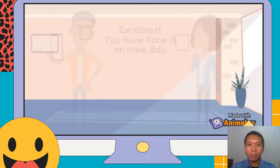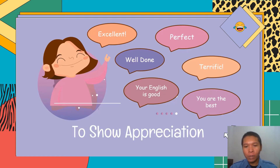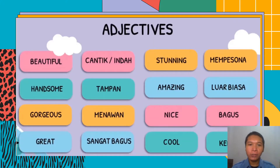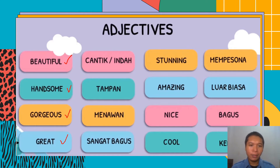So in the video, Edo finished his English assignment and told his teacher 'I've finished my English assignment,' and the teacher gave appreciation: 'Excellent, you have done it on time, Edo.' Besides that expression, we have many other expressions that can be used, such as: excellent, perfect, well done, terrific, or in English 'you can speak English,' 'your English is good,' or 'you are the best.'